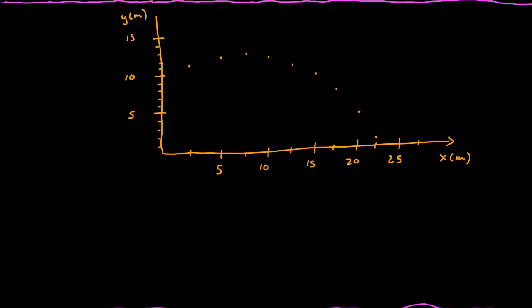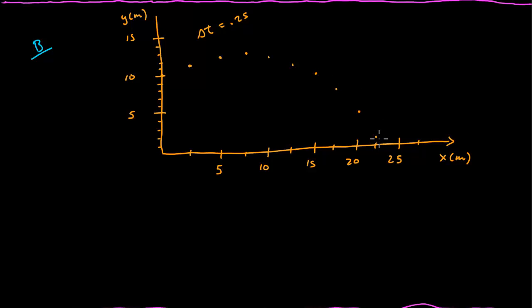Let's go on to our next system, example B, which had a water balloon thrown from a second-story building, about 10 meters up, and then it falls to the ground. Each snapshot here is a time interval of 0.25 seconds — about each quarter second. The balloon goes from about 11.5, then 12.5, reaches its height at 13 meters, then back down to 12.5, 11.5, 10, 8, 5, and about one and a half meters. Those are approximately the locations of where those snapshots are.